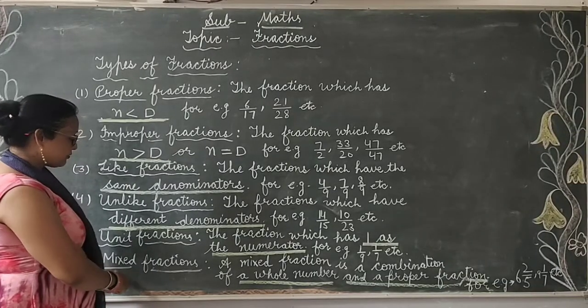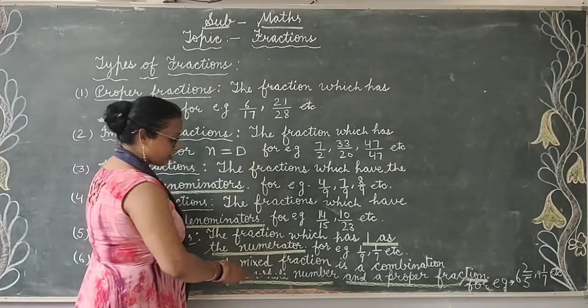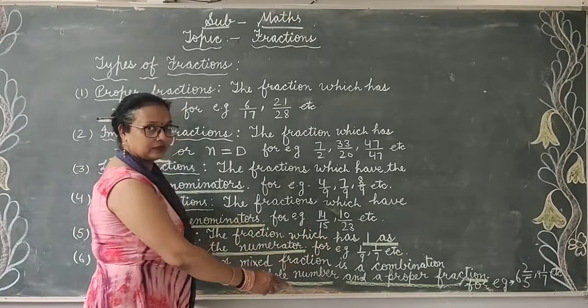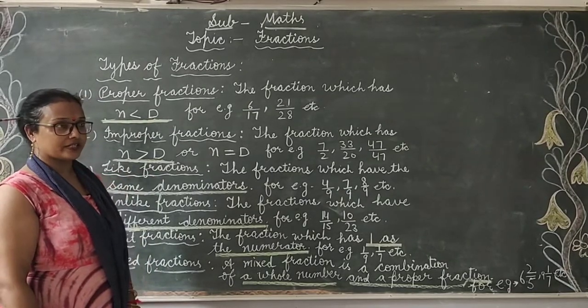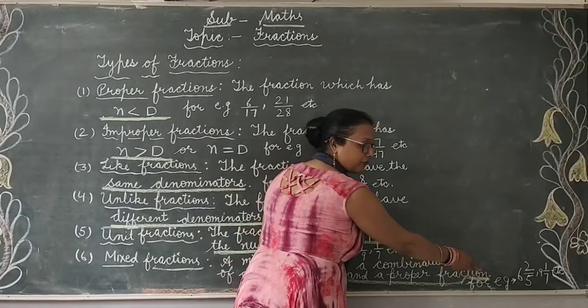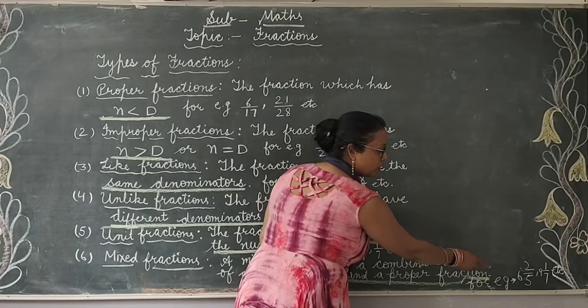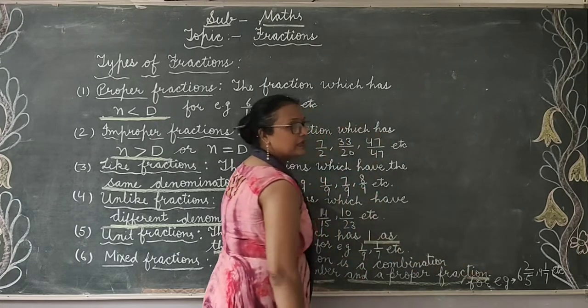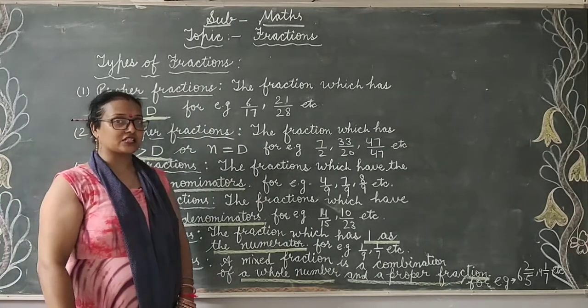Sixth is mixed fractions. A mixed fraction is a combination of a whole number and a proper fraction. Whole number means 1, 2, 3, 4, 5, 6. Here 6 and 2 by 5, 6 is a whole number, 2 by 5 is a proper fraction. This is called mixed fraction.